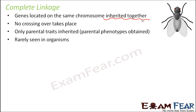However, this type of linkage is very rarely seen in organisms. Most organisms show incomplete linkage — they are linked but a few recombinants get produced because some amount of crossing over does take place. Complete linkage is very rare; however, it is seen in some organisms, for example in Drosophila, the fruit fly.